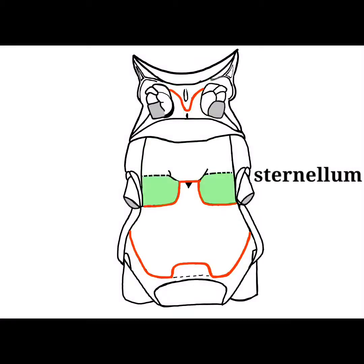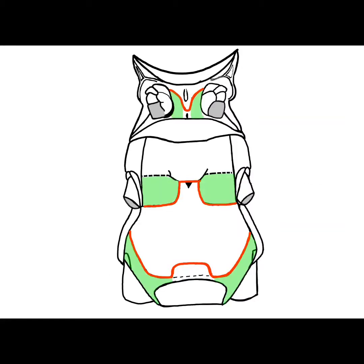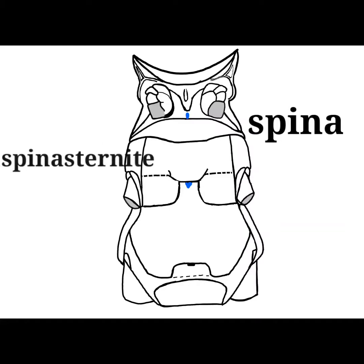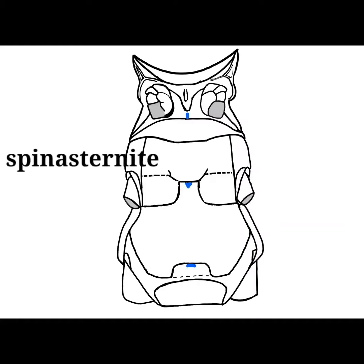The sternellum is often referred to as the furcasternite, since it is the sclerite that bears a furca internally. The spina, or median apodemal process, is seen externally as depressed areas in each segment referred to as the spinal pit. The spinasternite is the sclerite bearing the spina.